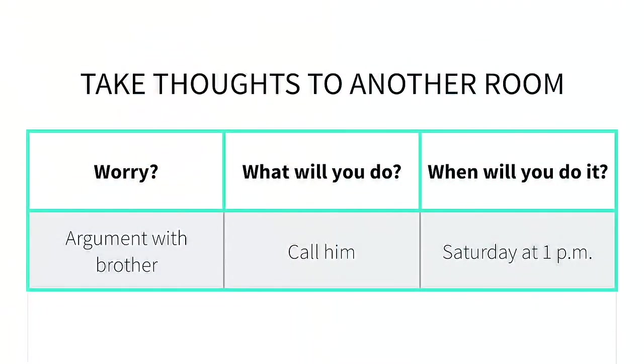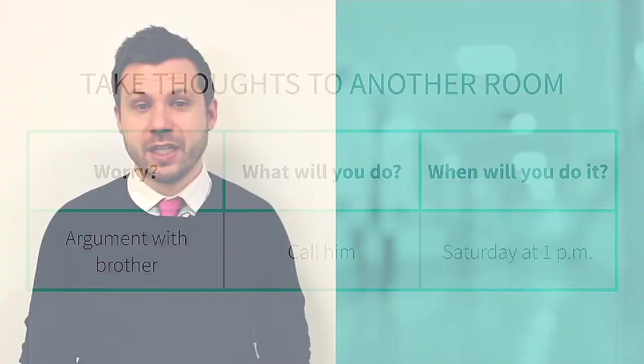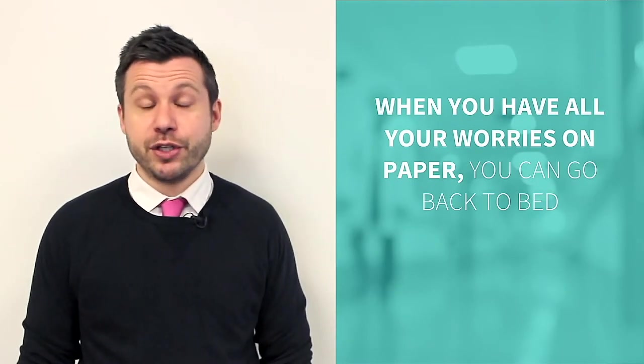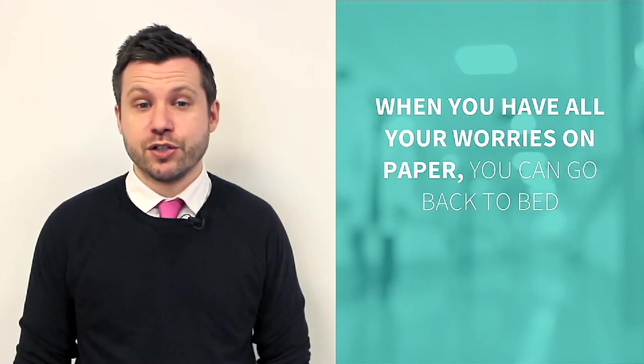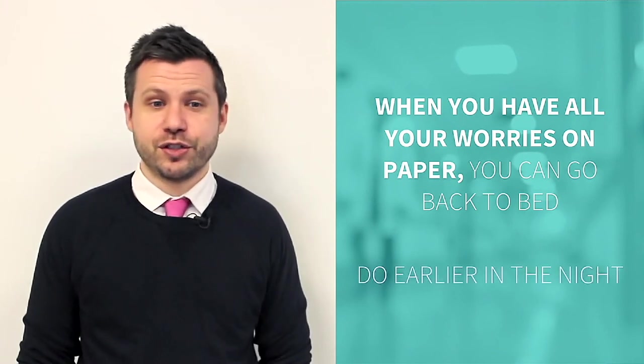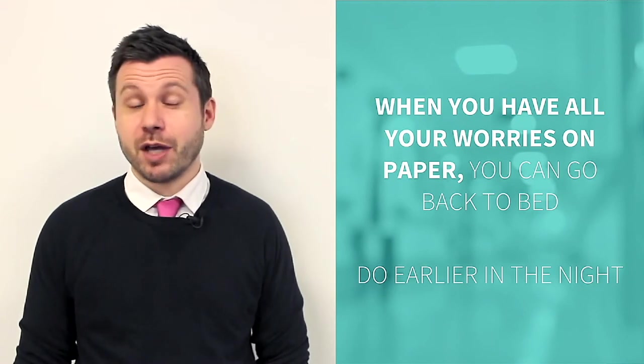This exercise works for bigger problems too. Let's say you are having an argument with your brother. Using this chart, you would write that down in the first column. Then, in the second column, you would write down what it is you are going to do about it to try and fix this problem. For example, you might call him. So when are you going to do that? In this example, the person writes down that they are going to call their brother on Saturday at 1 p.m. When you have all of your worries down on paper, you can go back to bed. Try doing this preemptively, earlier in the night, to try and prevent racing thoughts from coming in the first place.